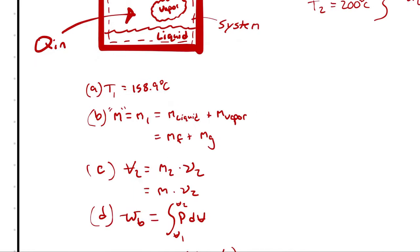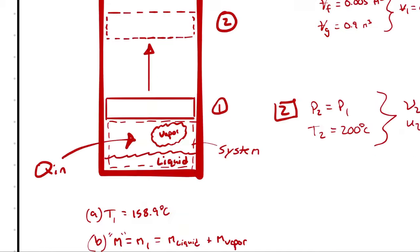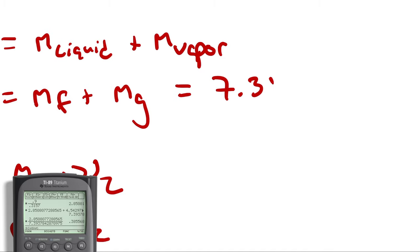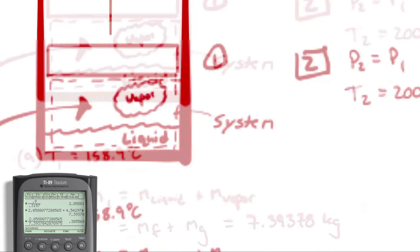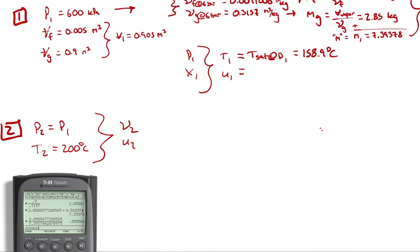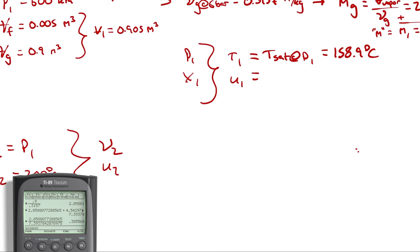Part A done: T1 = 158.9°C. Part B done: total mass = 7.39378 kilograms. For part C we need the total volume at state 2, which requires looking up specific volume at state 2. Let's look up U1, V2, and U2 all at once since we'll need them. If we had chosen the enthalpy approach, we'd look up H1 and H2 instead.